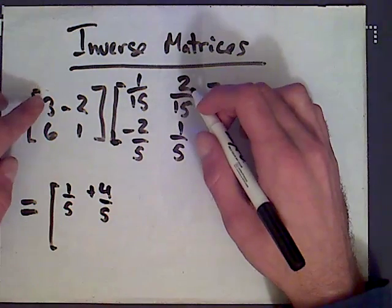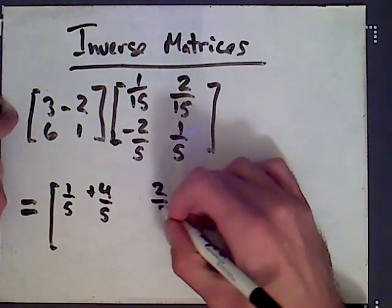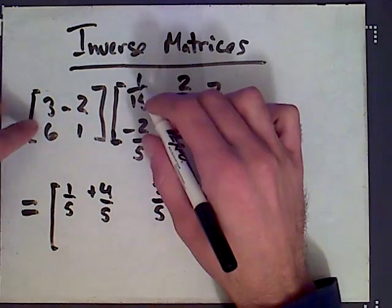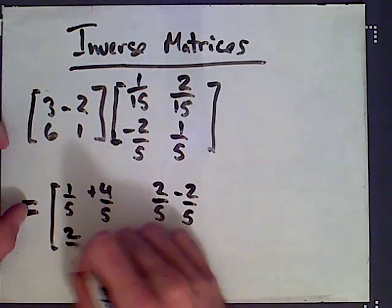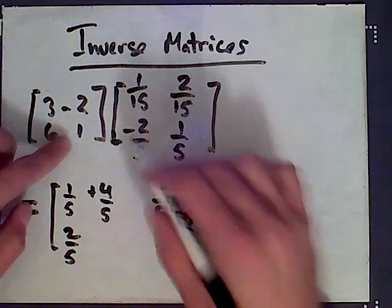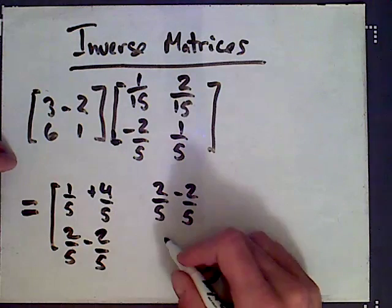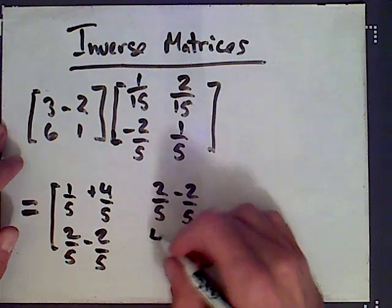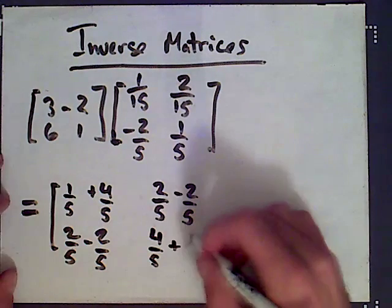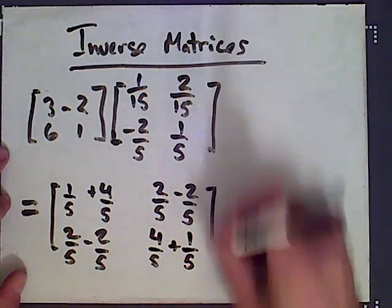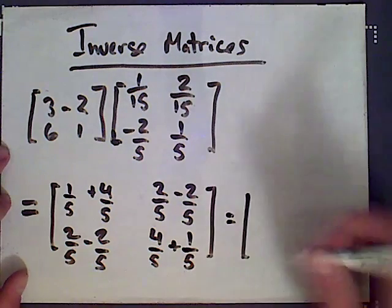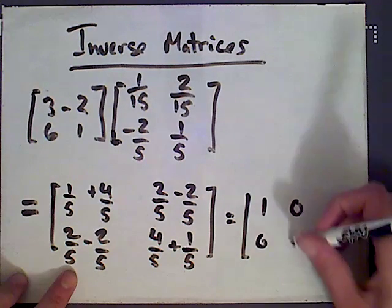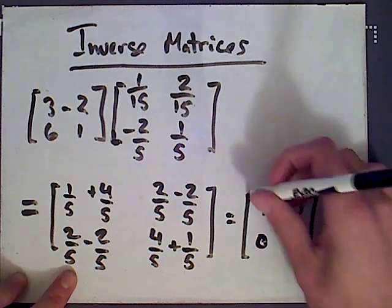Minus and minus is plus 4/5 in this entry. This entry here, we're going to get 6/15, which reduces to 2/5, and then minus 2/5 here. And then in the last entry we get 12/15, which reduces to 4/5, plus 1/5. And then adding these fractions together, what you see is we get 1, 0, 0, and 1—the identity matrix.